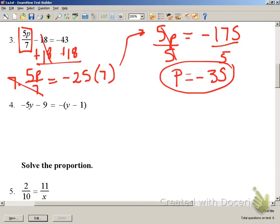Number 4. First thing we need to do is distribute this negative number here and here.